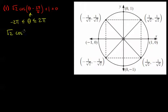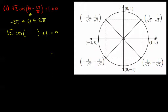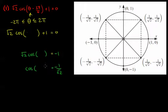Let me copy out that equation again: root 2 cos bracket... plus 1 equals 0. What we need to do is get to a stage where we have cos of that bracket on its own. So first of all we need to get rid of the plus 1 by subtracting it — 0 take away 1 is minus 1 on that side. So we'd have root 2 cos and then that bracket equals minus 1.